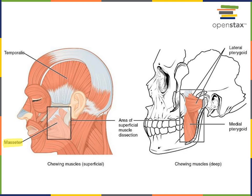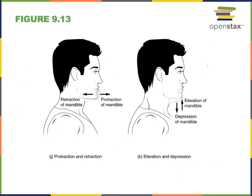Several more muscles contribute to mastication. The temporalis is a superficial muscle found on the lateral aspect of the cranium, and the pterygoid muscles are deeper muscles of mastication connecting from the sphenoid bone to the mandible. The actions of elevation and depression for the mandible correspond to opening and closing the jaw.